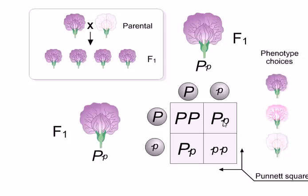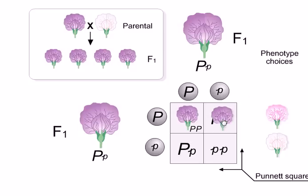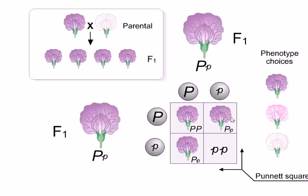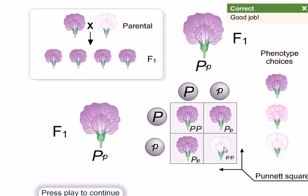What will be the phenotypic choices? Caps P, caps P is dominant, so it will show the dominant phenotype. Caps P, small p — though heterozygous — still has one dominant trait, so the answer is dominant. The same applies to the other heterozygous combination. The fourth one, small p small p, is totally recessive, so it will be white.